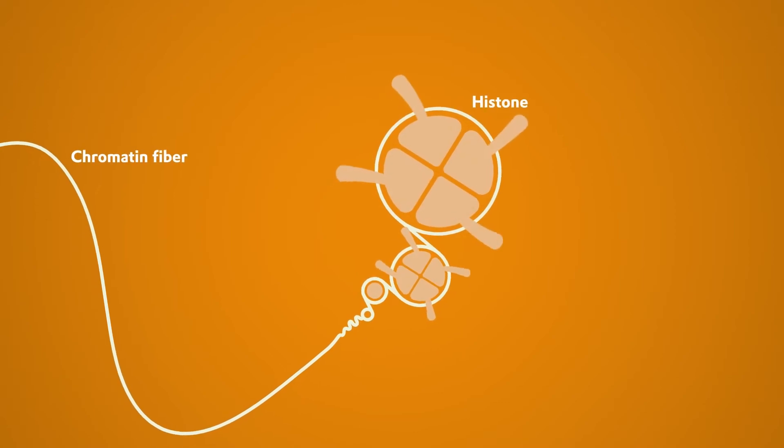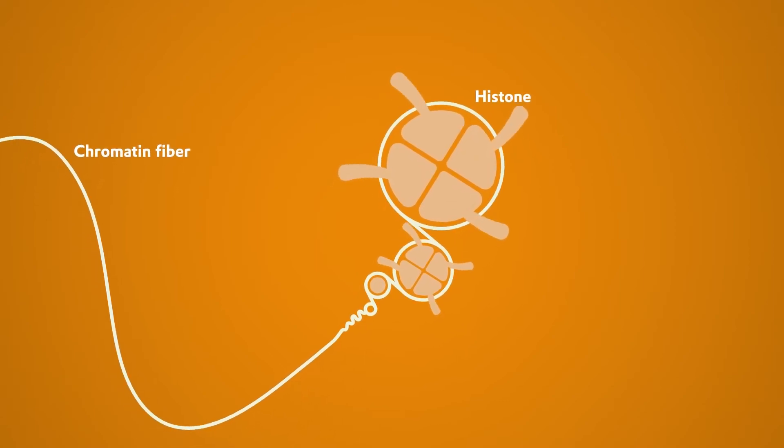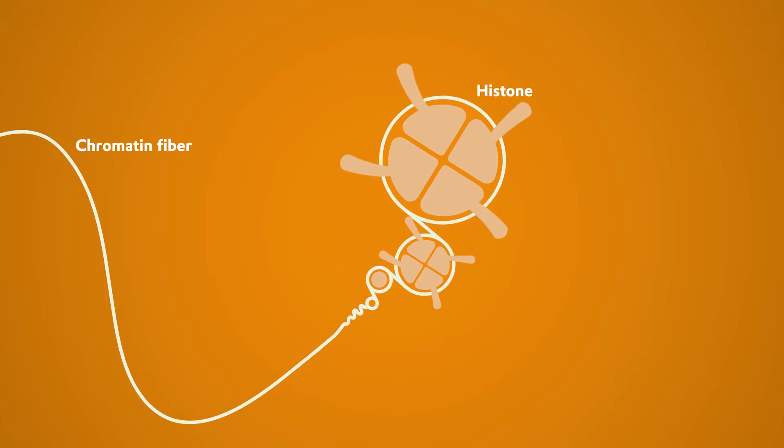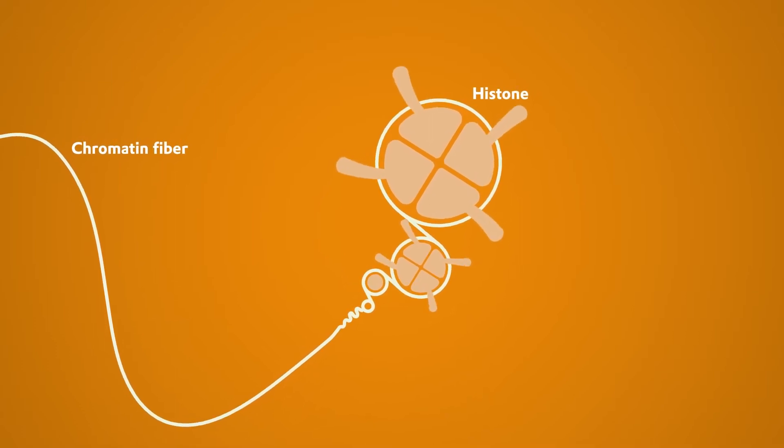In the chromosomes, the DNA is in the form of a chromatin fiber, which is wrapped around protein coils known as histones. Let's take a closer look at the histones.